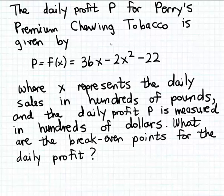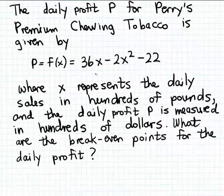In this example we're given the profit function for a particular item. In this case that item is Perry's premium chewing tobacco, and we're asked to determine what the break-even points are for the profit. X represents the daily sales in hundreds of pounds of Perry's chewing tobacco, and the output is the daily profit from sales, measured in hundreds of dollars.